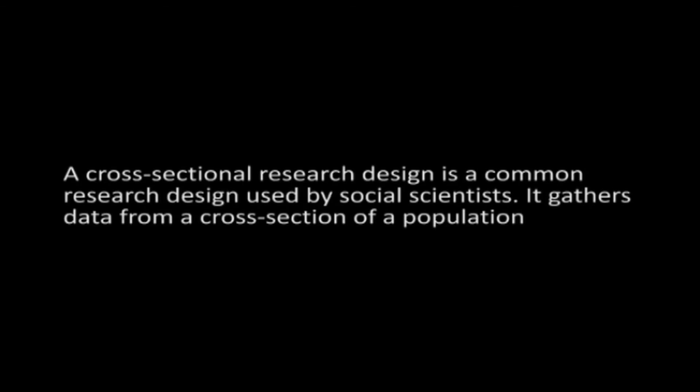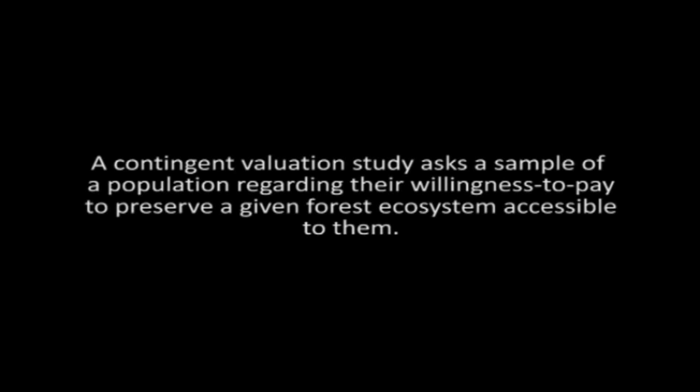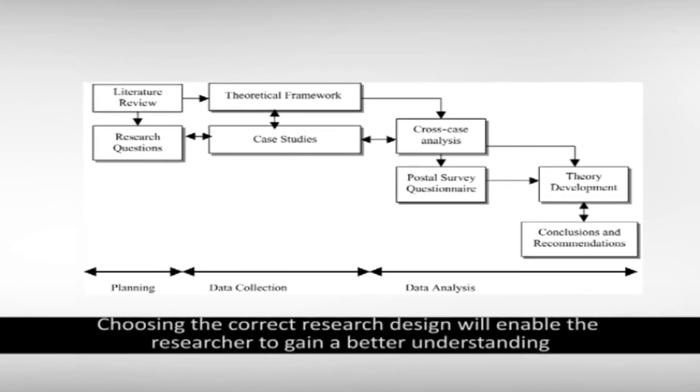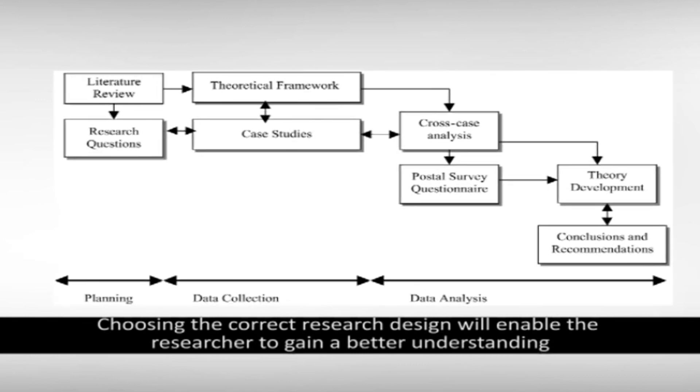Cross-sectional Research Design: A cross-sectional research design is a common research design used by social scientists. It gathers data from a cross-section of a population. For example, a contingent valuation study asks a sample of a population regarding their willingness to pay to preserve a given forest ecosystem accessible to them. Choosing the correct research design will enable the researcher to gain a better understanding of social phenomena.